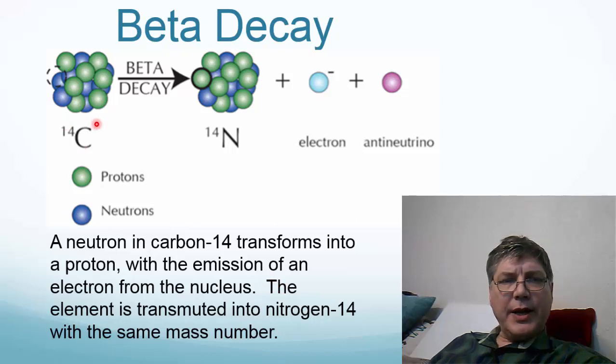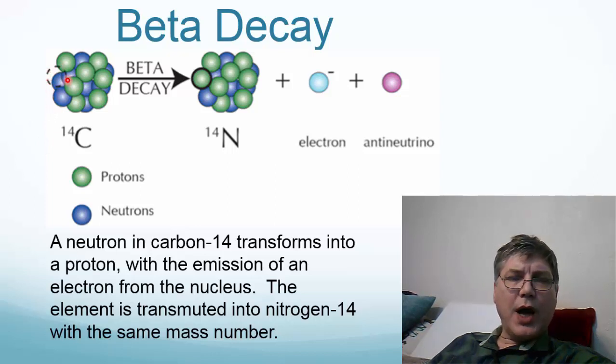In this example of beta decay, we have carbon-14, a naturally occurring isotope of carbon, which is radioactive. And carbon-14 has a couple more neutrons than the carbon-12 that is normally present. One of those neutrons decays into a proton and an electron. And when that happens, since for mass number a proton and a neutron are the same, the mass number doesn't change.